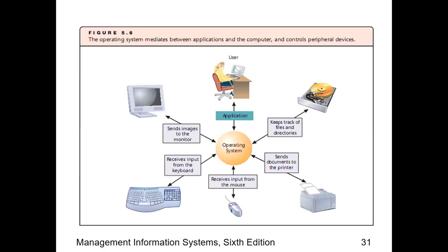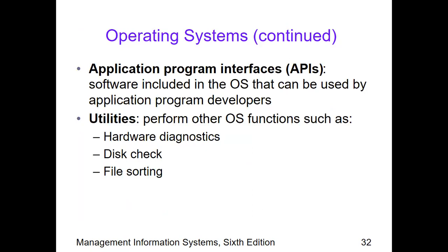The OS mediates between applications and the computer, and controls peripheral devices such as the hard drive. The OS can work with peripheral devices if certain programs or instructions are inputted. These peripheral devices include the monitor, keyboard, mouse, printer, and hard disks or drives. The OS helps when instructions are provided by users, sends them to the respective devices, and the peripheral equipment processes them accordingly to produce the desired output.